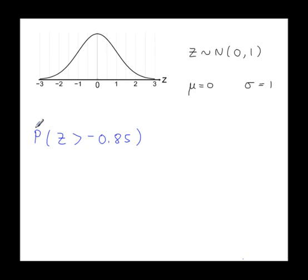Okay, another example. But this time we're looking at more than probabilities. Another negative value. On the number line there, minus 0.85 is around here. I'm going to shade to the right of that line.